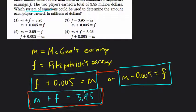M plus F equals $3.95. That's this one. M plus $0.005 is F. That's not true because Fitzpatrick doesn't earn more than McGee, it's the other way around. So here, I'm going to jump over here. Look at this.